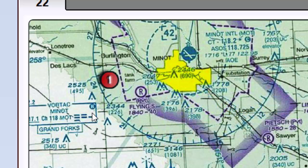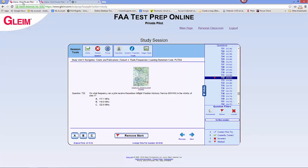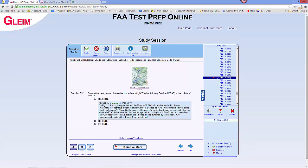And what you do is refer to your navigation chart to find your nearest HIWAS station. So back to our question — A is the correct answer.